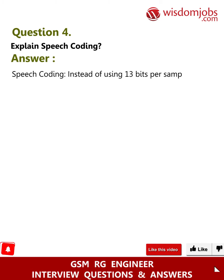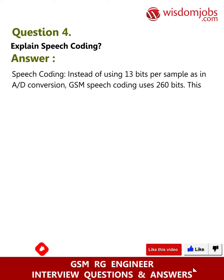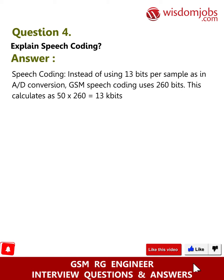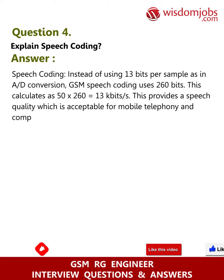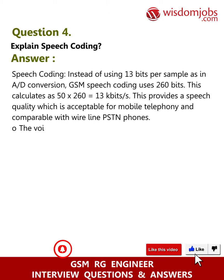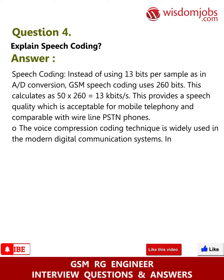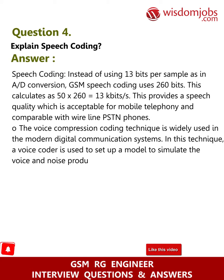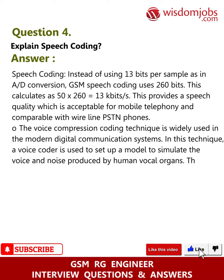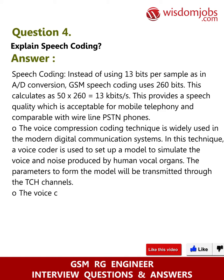Question 4: Explain speech coding. Instead of using 13 bits per sample as in A/D conversion, GSM speech coding uses 260 bits. This calculates as 50 × 260 = 13 kilobits per second. This provides speech quality acceptable for mobile telephony and comparable with wireline PSTN phones. The voice compression coding technique is widely used in modern digital communication systems, where a voice coder simulates the voice and noise produced by human vocal organs.